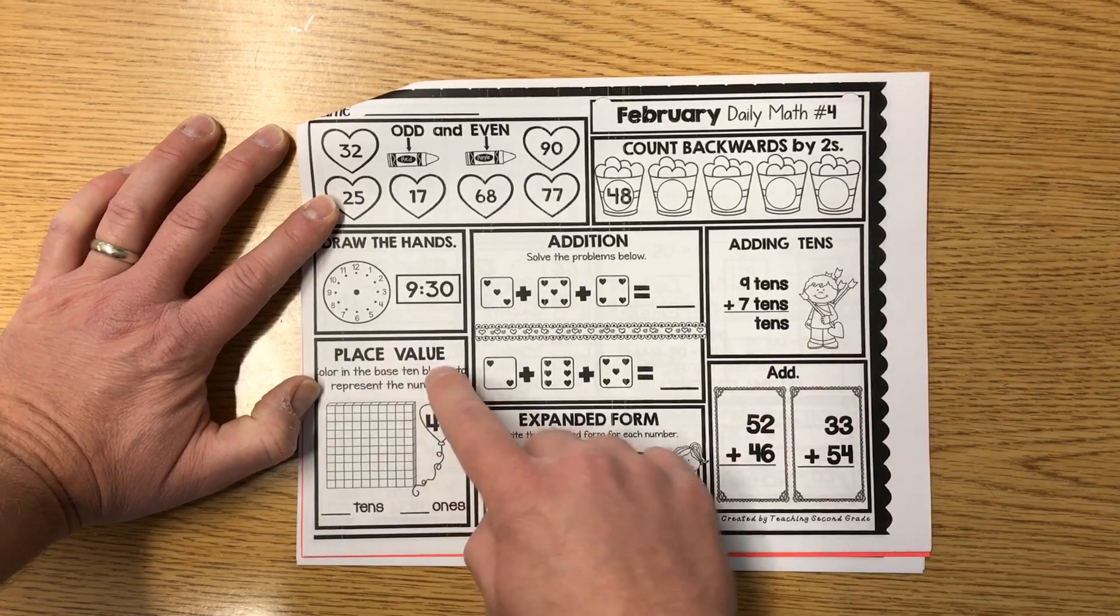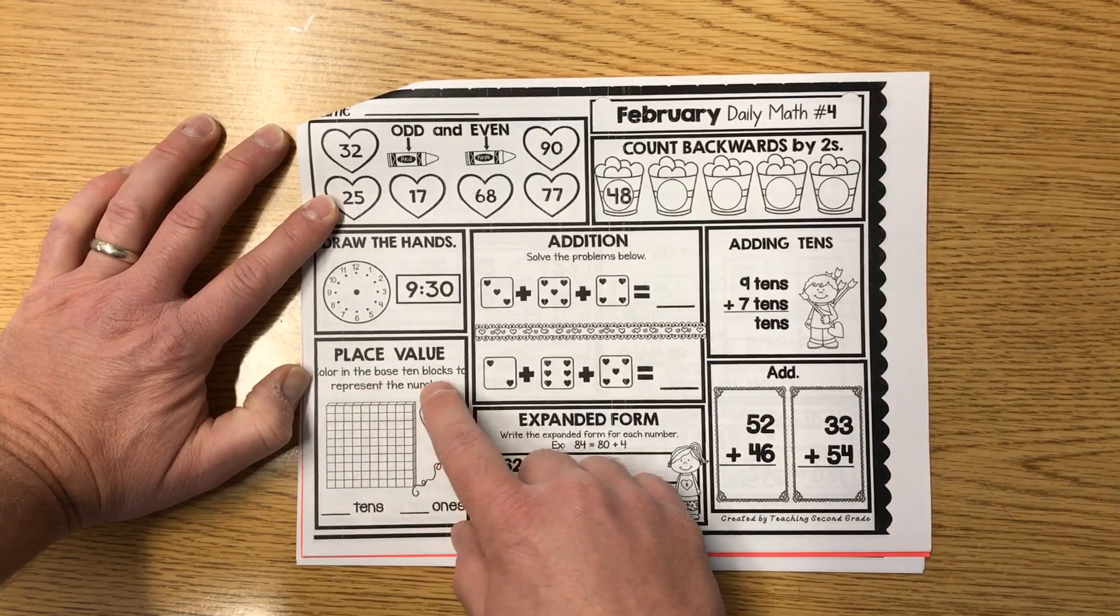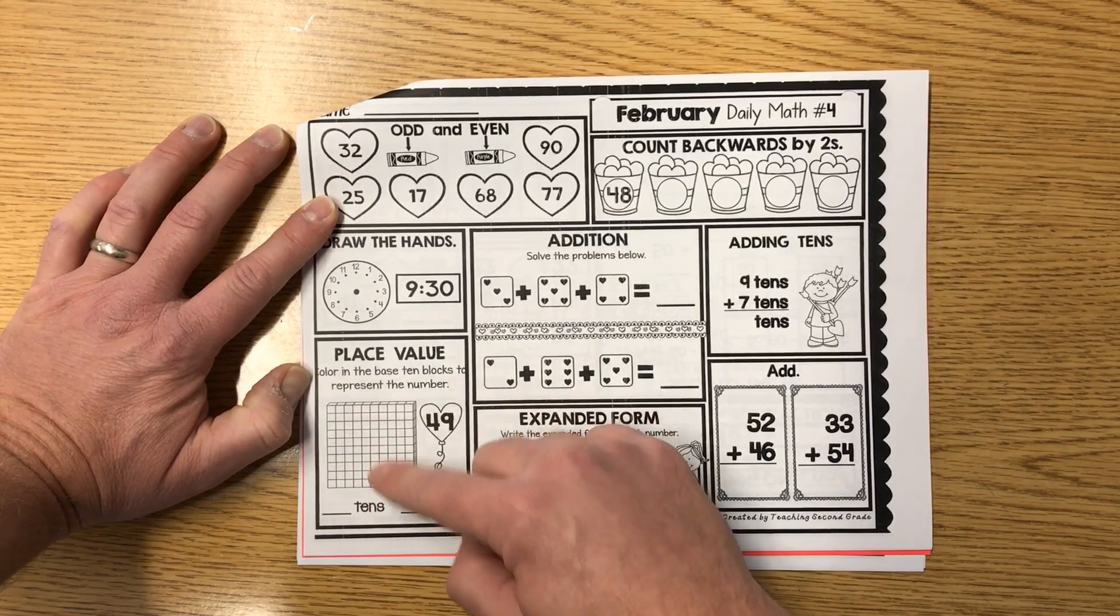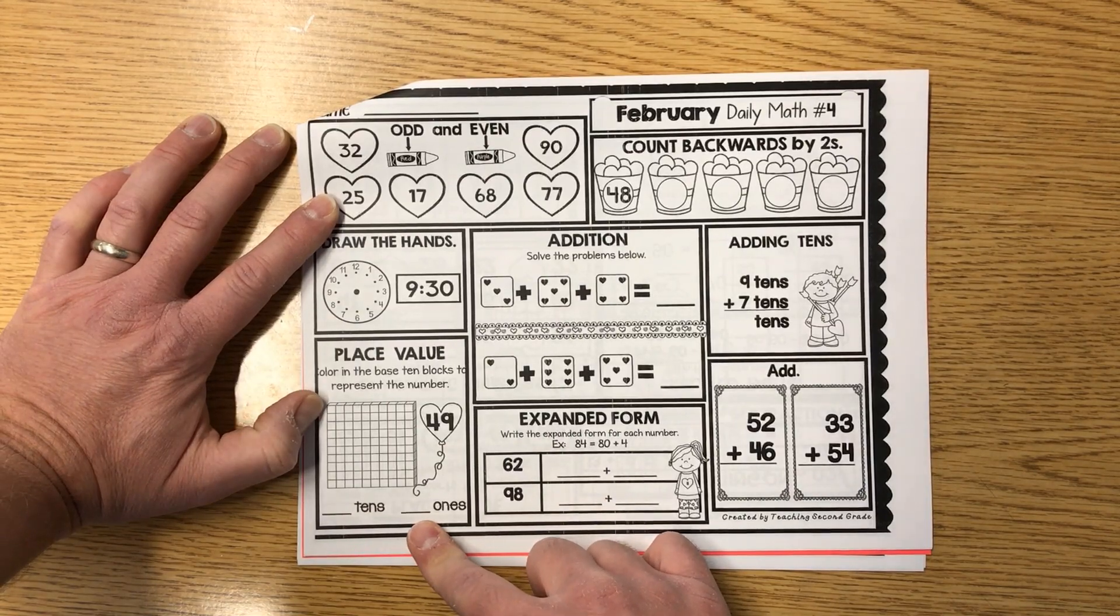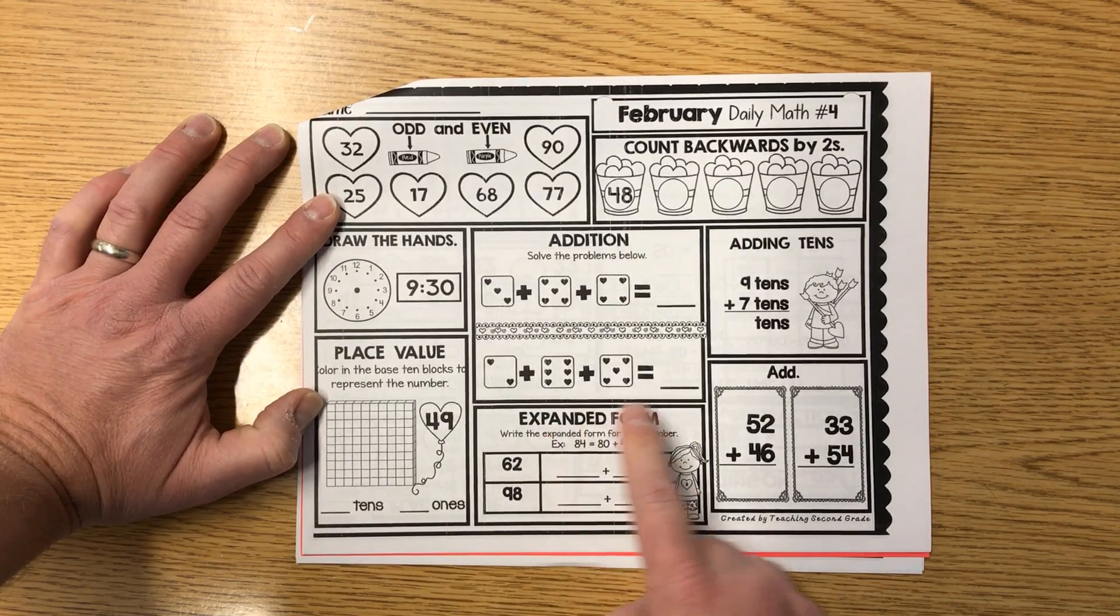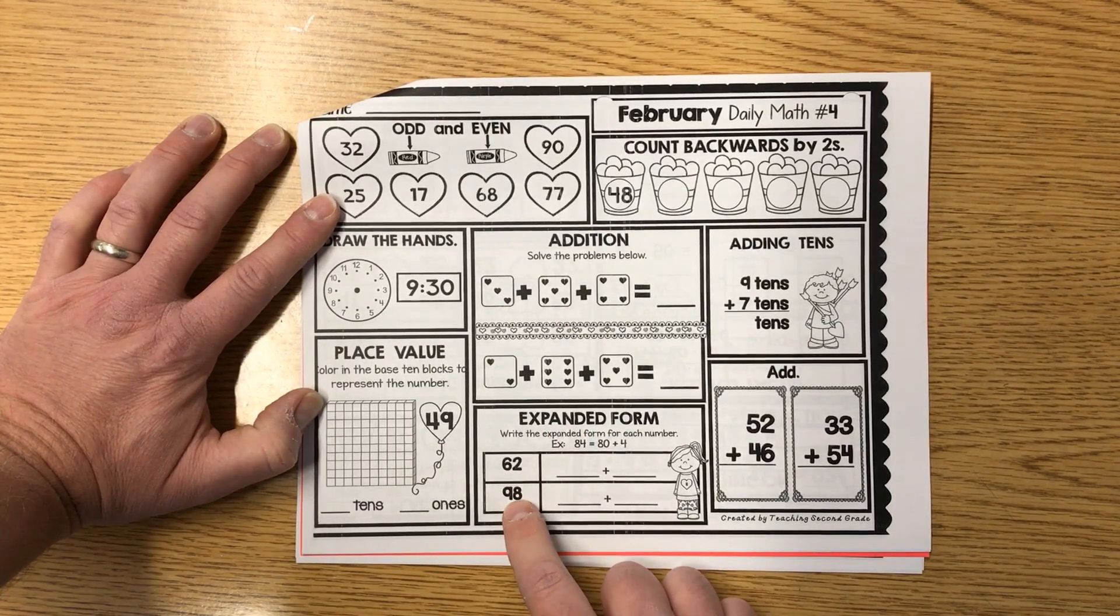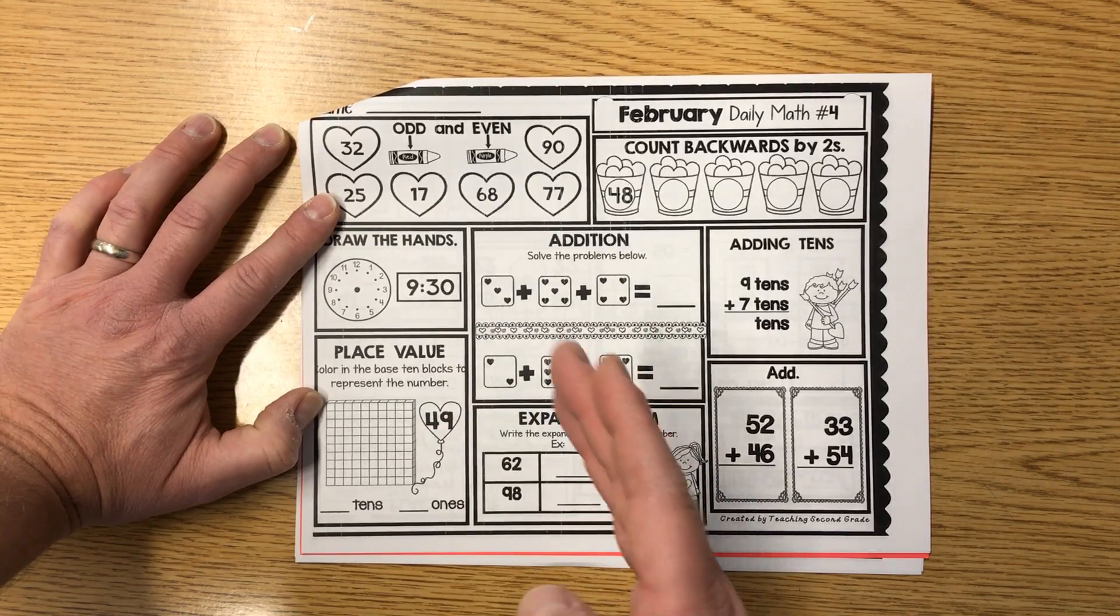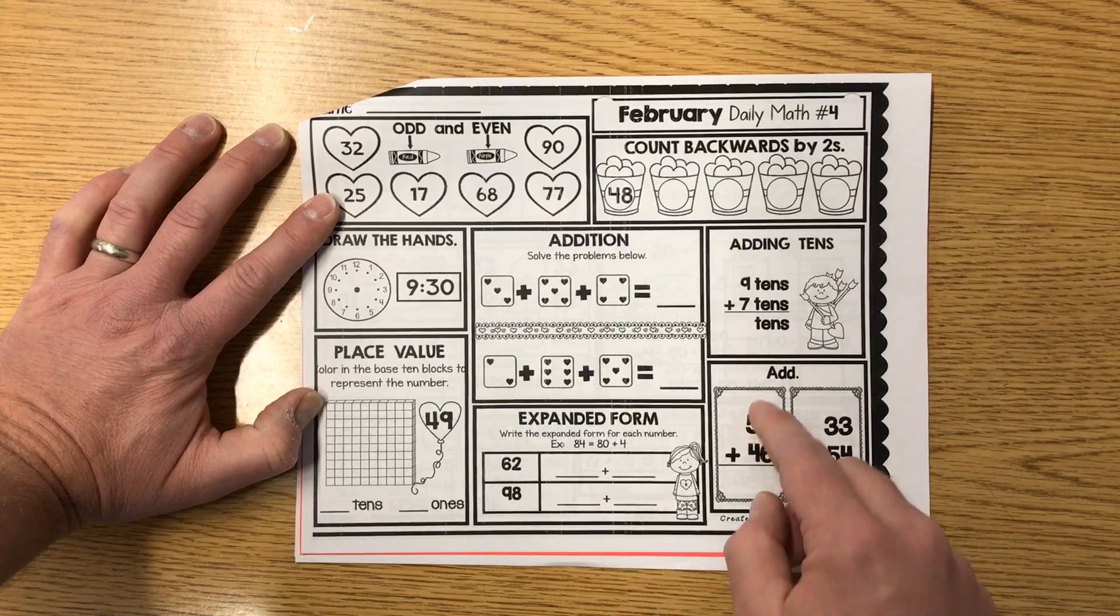Place value: color in the base 10 blocks and represent the number. So we got 49, so you're gonna go ahead and color in the correct amount. Write how many tens, write how many ones. And then we have expanded form for 62 and 98. Write those in expanded form, 62, 98. And finally add up your two digit numbers there.